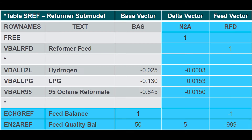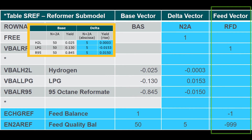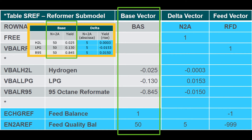Now let's look at where to put these data into the submodel table. This is an example of a reformer submodel. Similar to fixed yield submodels, base delta submodels have feed columns or feed vectors which represent the flow rate of the feed streams. In our example, this feed column is shown as RFD, which stands for reformer feed. In addition, we need to set up base vector and delta vector columns. The base vector — in our example BAS — represents the yield per unit of feed generated at the base feed quality. In our example, this was 50 for N plus 2A.